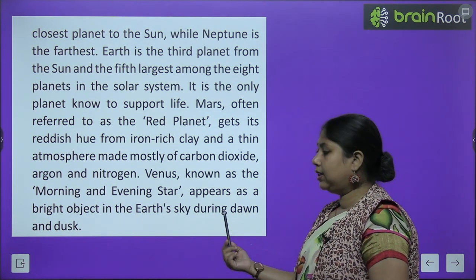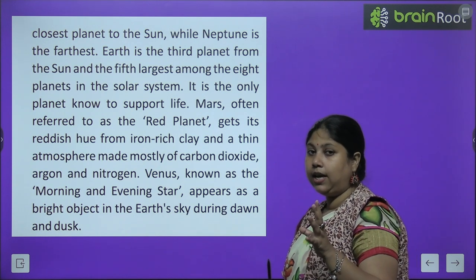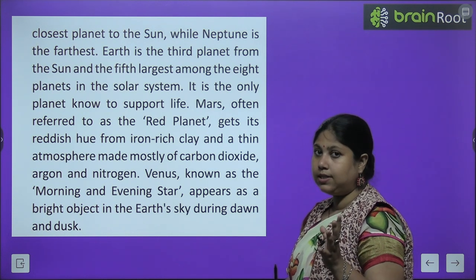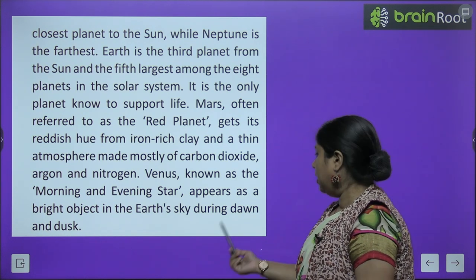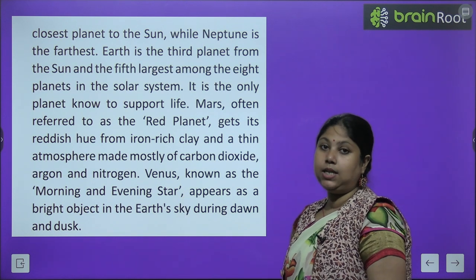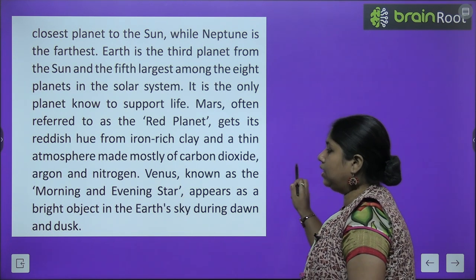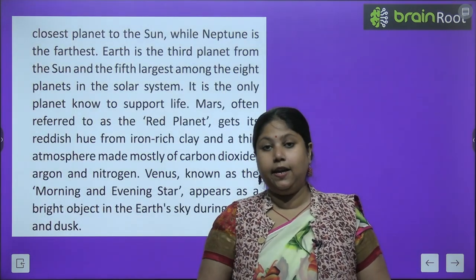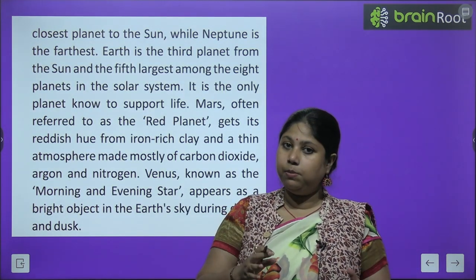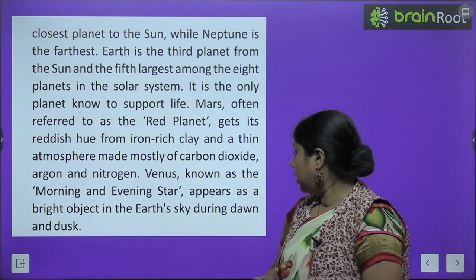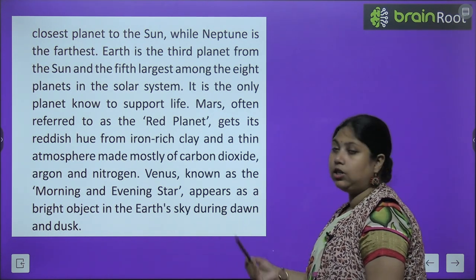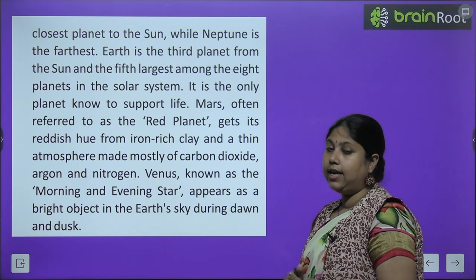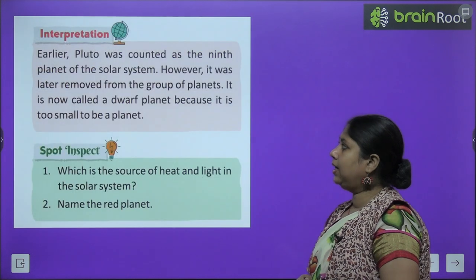Venus is known as the morning and evening star because, as seen from Earth, it appears very bright at sunrise and sunset. Dawn means sunrise and dusk means sunset — dono hi samay Venus bahut zyada bright lagta hai, isliye isko morning and evening star bhi kaha jaata hai.